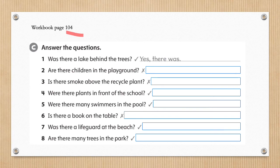Number 2: are there children in the playground? Number 3: is there smoke above the recycle plant? Number 4: were there plants in front of the school? Number 5: were there many swimmers in the pool? Number 6: is there a book on the table? Number 7: was there a lifeguard at the beach? Number 8: are there many trees in the park? Students, please remember to look at the ticks and crosses.